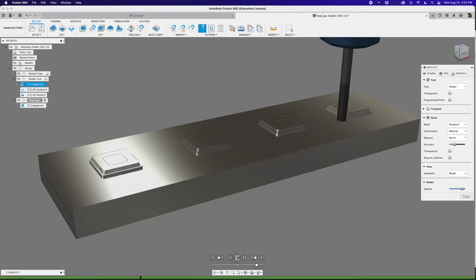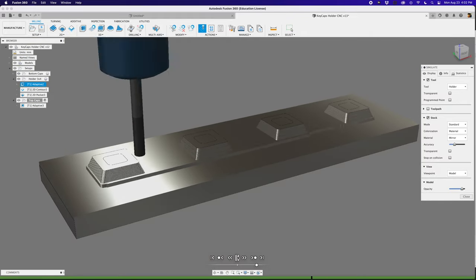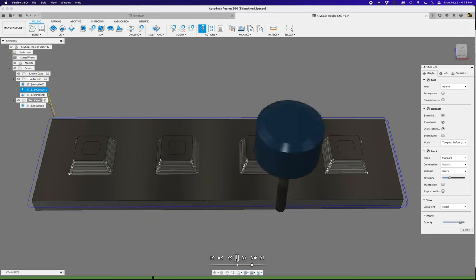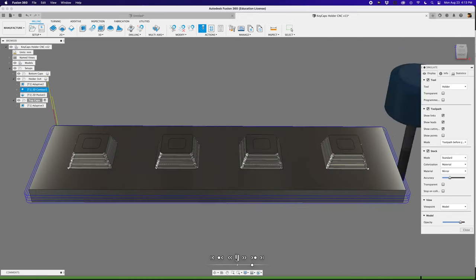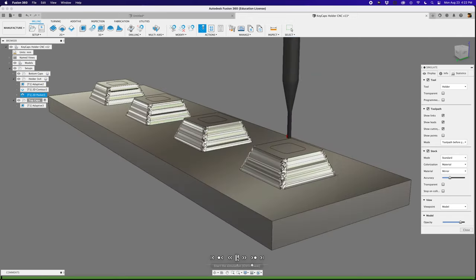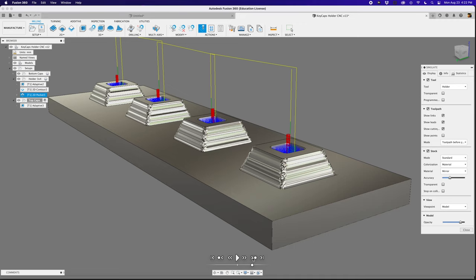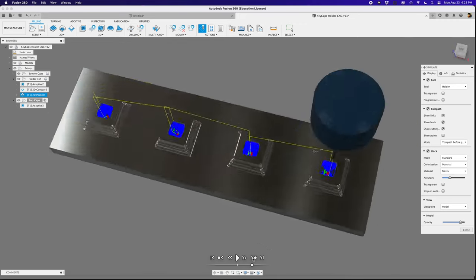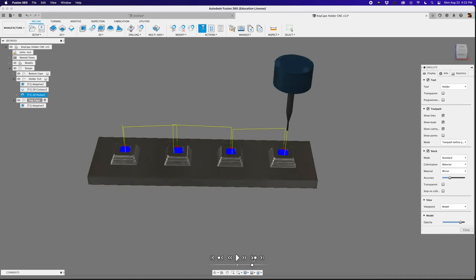For the fixture that will hold our keycaps, I was able to use the 1/8th inch flat end mill and I used adaptive clearing to carve out most of the material. Using the same tool, I used the 2D contour to cut out the outline of the holder. To create the holes for the stem of the keycap, I switched over to the 1/32 inch flat end mill and set a 2D pocket with a step down of 0.2 millimeters. And that's pretty much all of the tool paths and operations. Now on to milling.